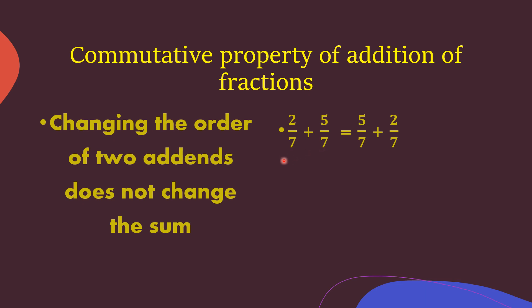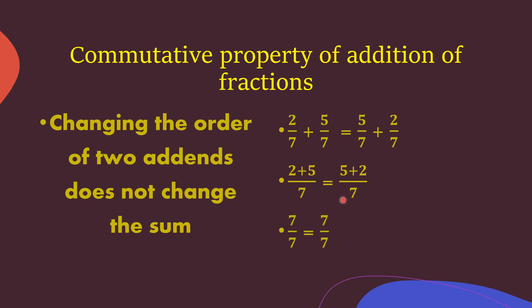We will solve both parts — the left hand side and the right hand side. Because the denominators are the same, we write 7 as the denominator and add the numerators. Left side: 2 plus 5 by 7. Right side: 5 plus 2 by 7. Both give us 7 by 7. So our final answer is 7/7 in both cases.